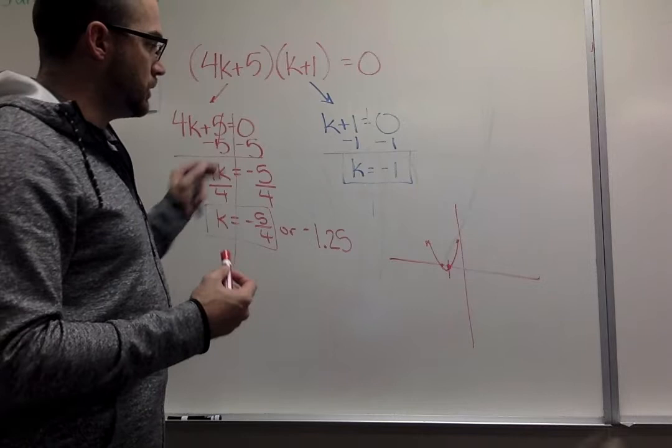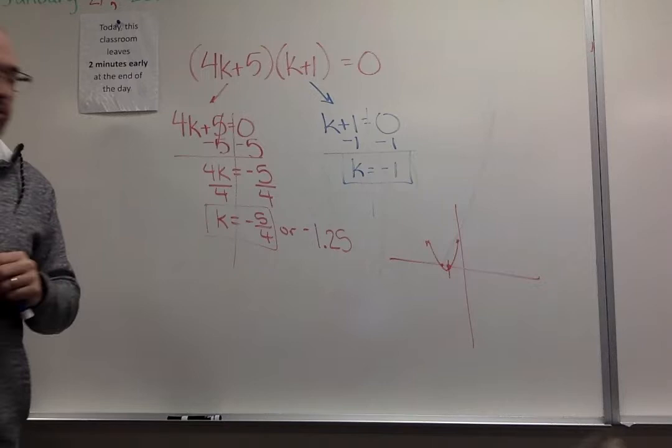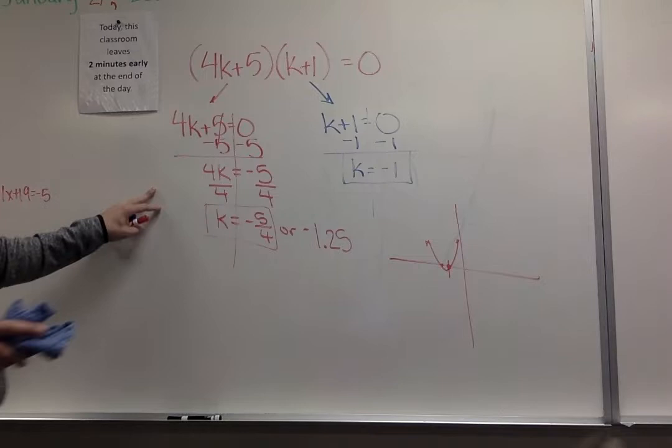That's the general idea of what that would look like once we get done. These are called our zeros or solutions when we get to that single k or x or whatever we're solving for.